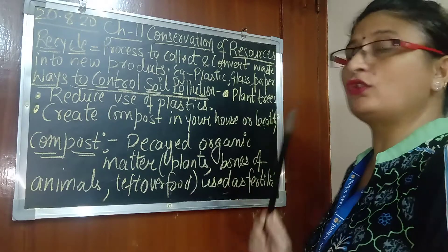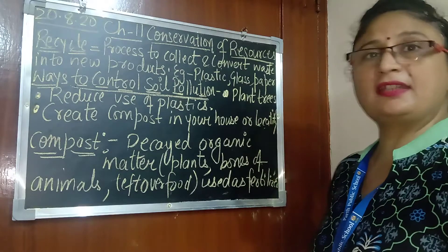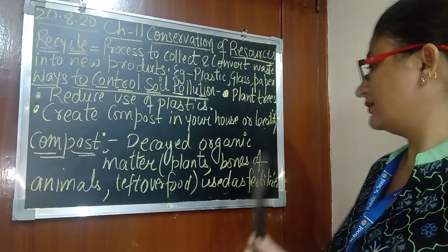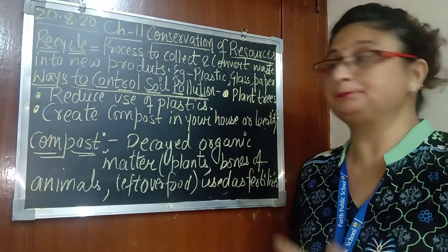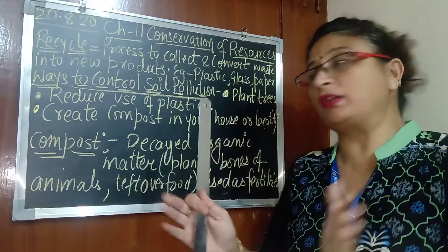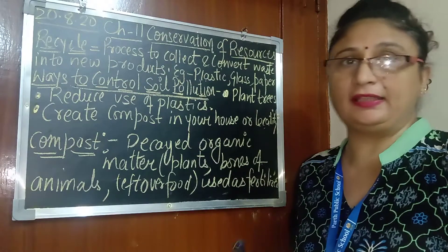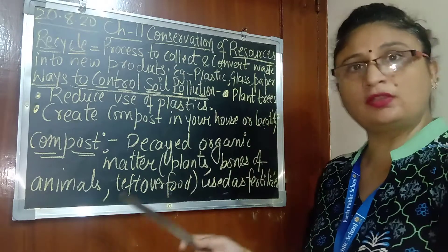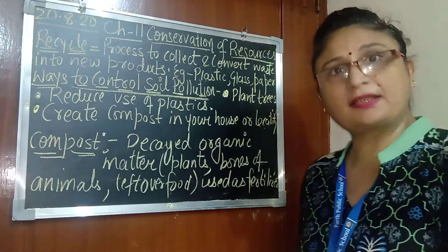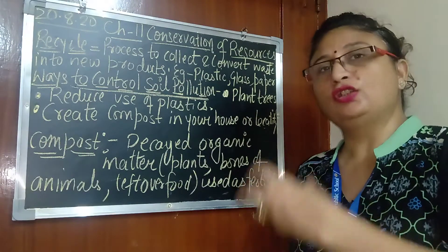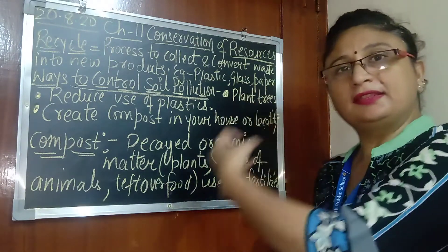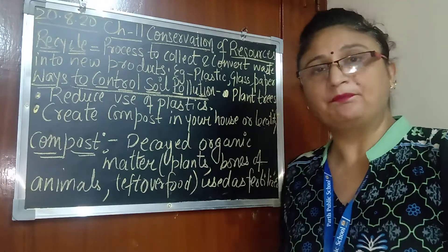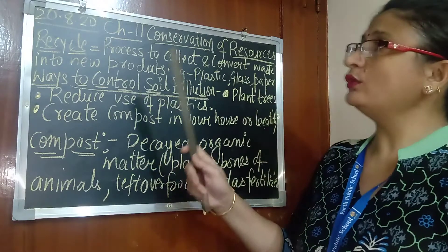The third way to reduce soil pollution is by creating compost in your house or locality. Compost is an organic matter made from leftover food, animals, and plants, which we can use as a fertilizer. We dig a pit and put leftover food, bones of animals, and plants into it and cover it. This organic matter will convert into fertilizer and increase the fertility of the soil, helping to reduce soil pollution.